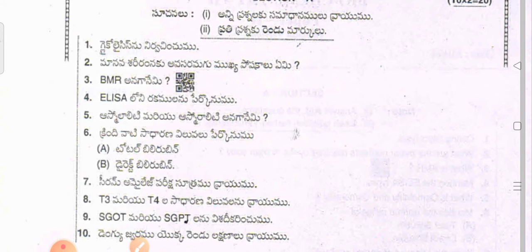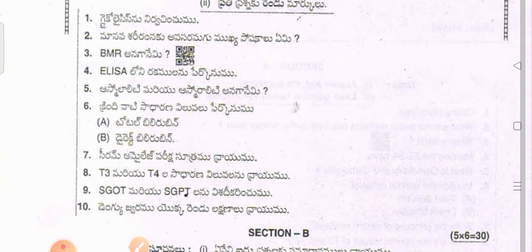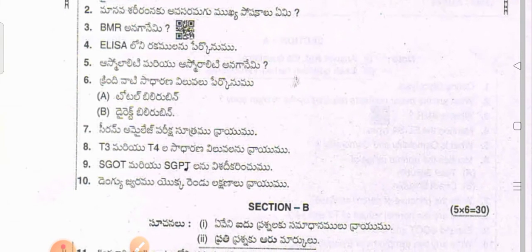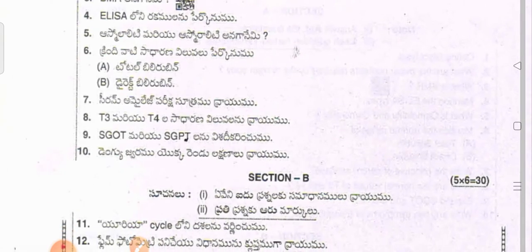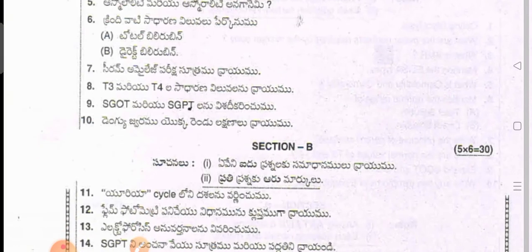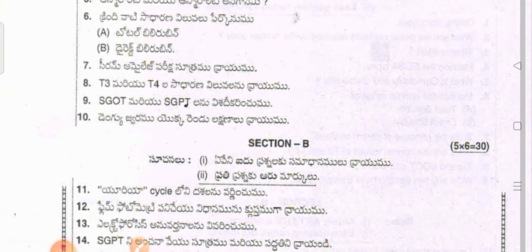Mention the normal range of total bilirubin and direct bilirubin. Write the principle of serum amylase. What are the normal values of T3 and T4? Mention SGOT and SGPT normal values.